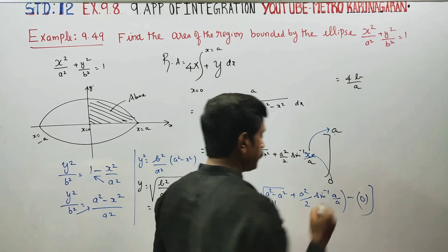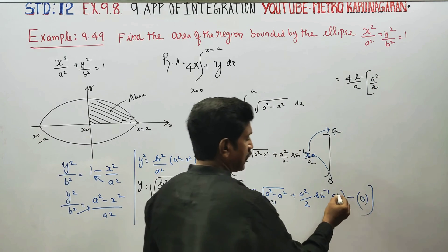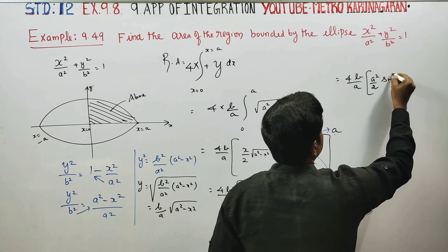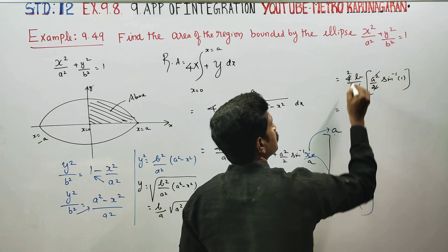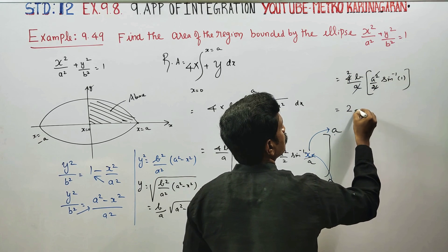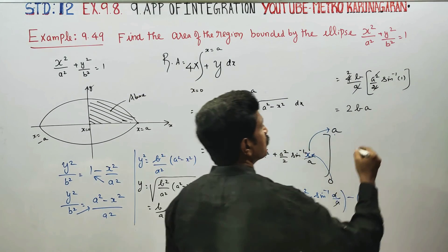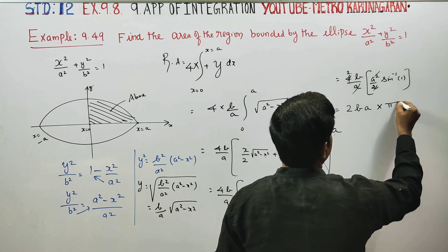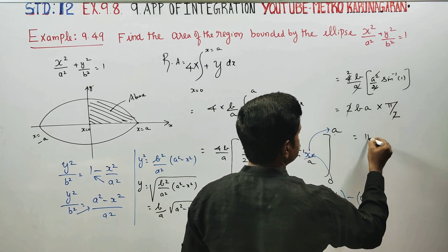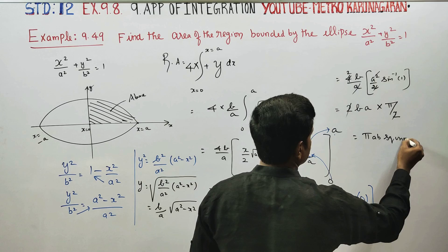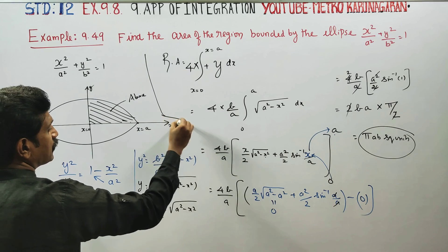The remaining term is (4b/a) × (a²/2) × sin⁻¹(1). The a and a² cancel, and the 2s cancel, giving 2b × sin⁻¹(1). Since sin⁻¹(1) = 90° = π/2, the answer is 2b × π/2 = πb... simplifying fully: the area of the ellipse is πab square units.